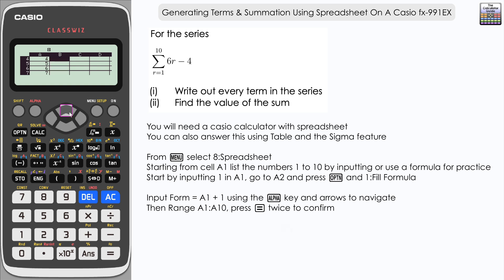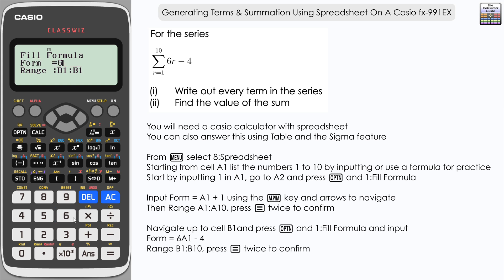Of the next column cell B1, this is where we're going to generate the terms of a sequence and again we're going to use the formula feature in order to be able to do this. So in cell B1 it's option one, fill formula, and the formula is going to be, well we can see that we've got the nth term of the series here, 6r minus 4.